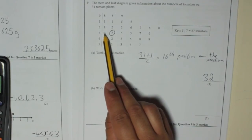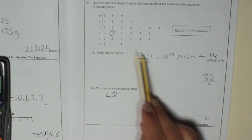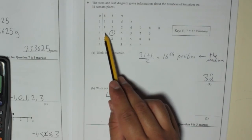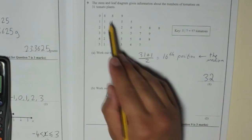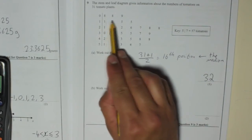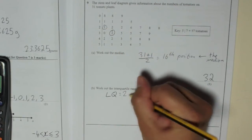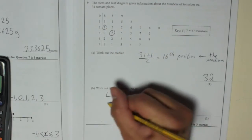The middle, just how we found the middle there, the middle of the first half is going to be the first quarter, the lower quartile. So we'll take, there's 15 of them, add 1 is 16, divided by 2 is 8. So the 8th one will be the lower quartile. 1, 2, 3, 4, 5, 6, 7, 8. So 21. So that's the lower quartile.